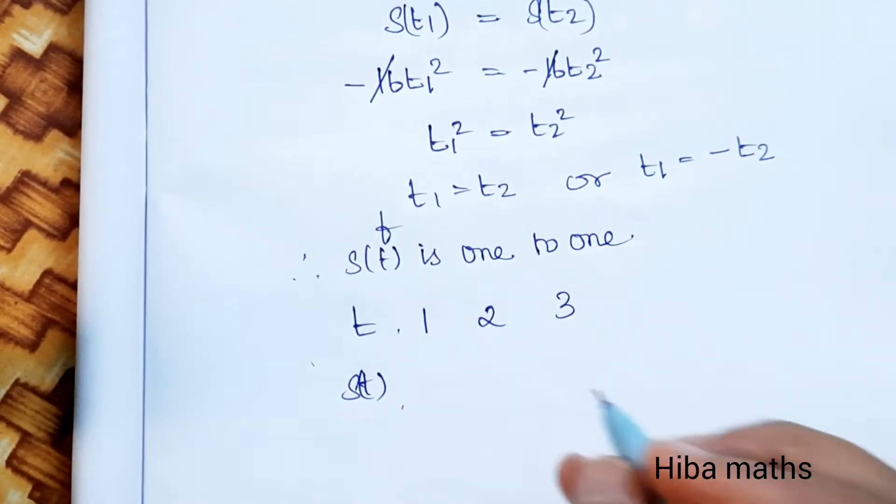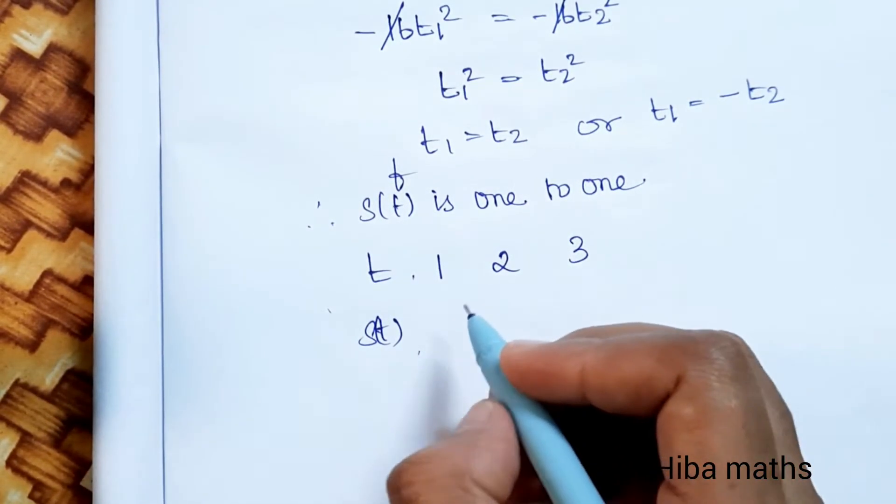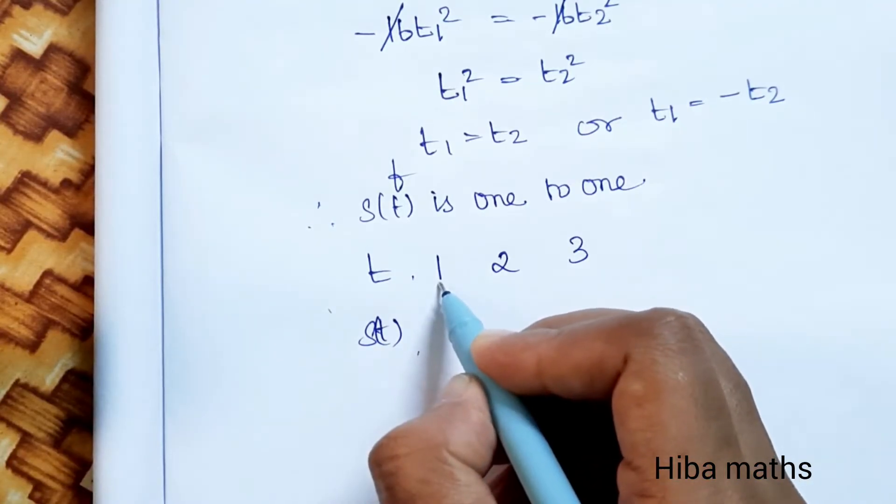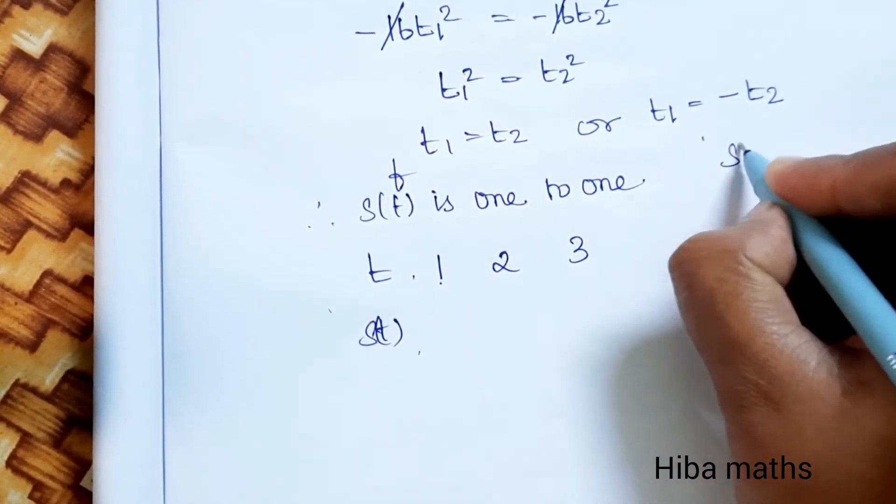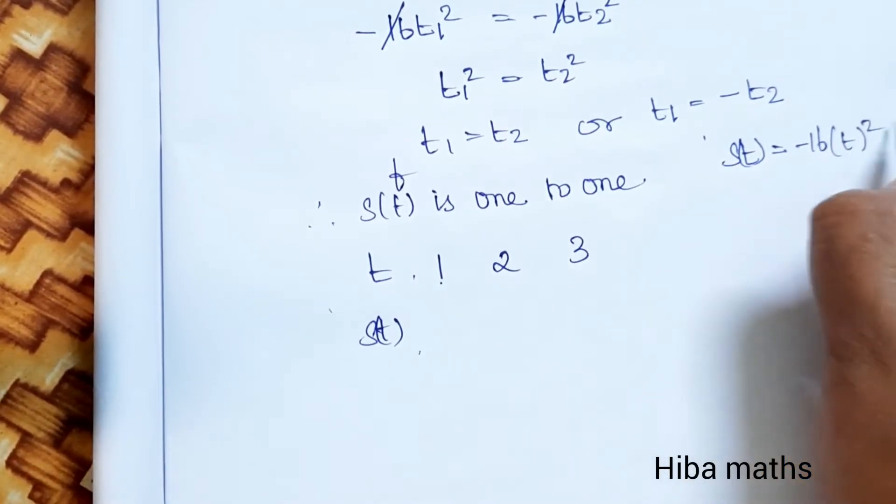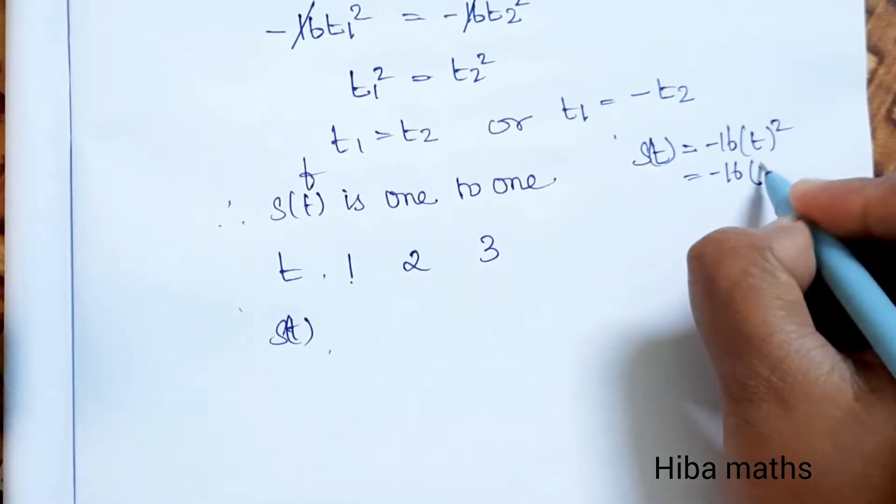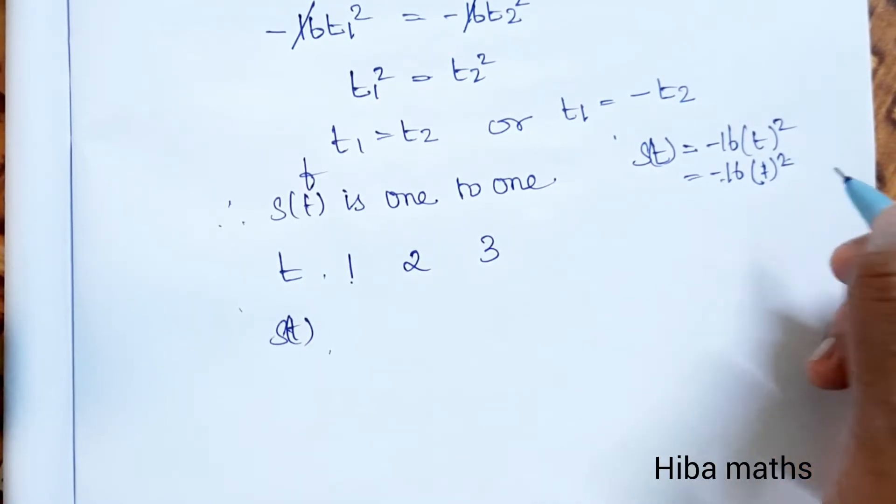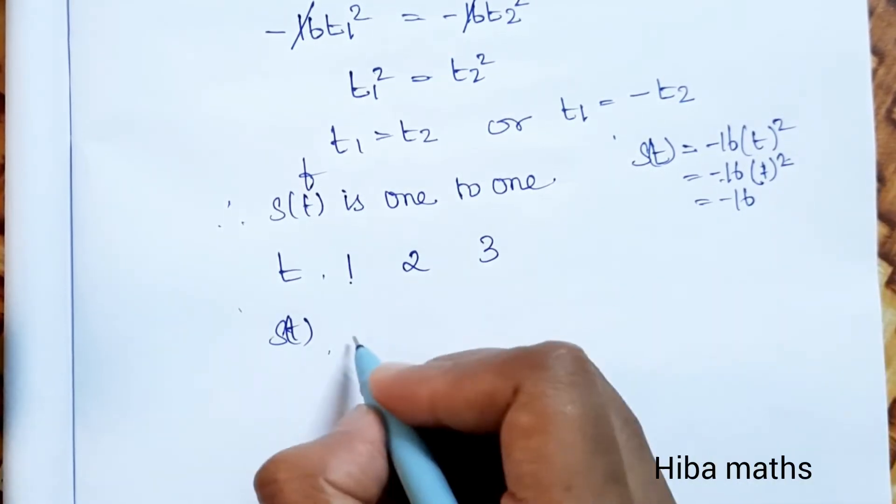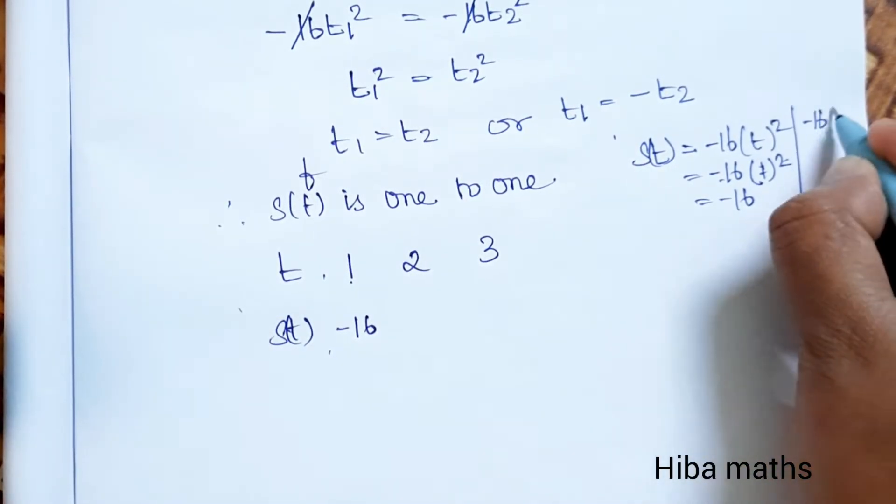Since values will be negative, we calculate: s(t) = -16t². For t = 1: s(1) = -16(1)² = -16.